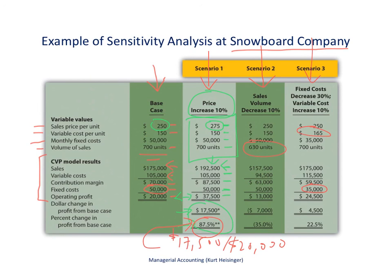I'm not going to go through the second and third scenarios in detail — you can take a look at those on your own. But this is the format we use to show what will happen to the bottom line, often operating profit, if we change certain variables within our initial base case.